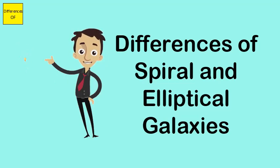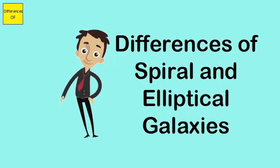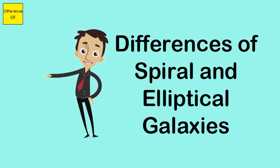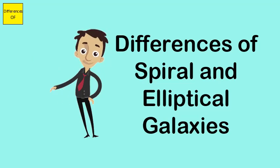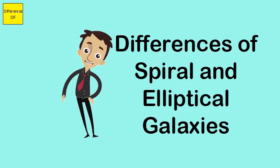Spiral galaxies have a very dense nucleus and a region of stars bulging outwards from the disk, therefore called the central bulge. Elliptical galaxies also have dense centers, but they do not protrude from the body of the galaxy.